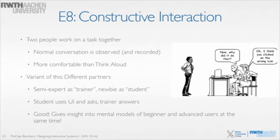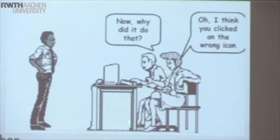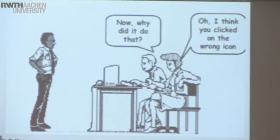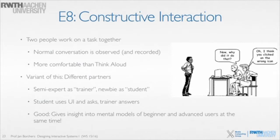With constructive interaction, you get two people. One person says 'why did it do that?' and the other, who maybe knows the system a little, says 'I think you clicked on the wrong icon.' You've introduced a second person and optionally made the two users different knowledge levels — one a total newbie, the other having seen the system a bit. Even if both are newbies, you observe them trying the task together. Now it's perfectly normal to talk because you're talking to each other, and I just observe the discussion. It's easy to talk aloud when talking to somebody else.